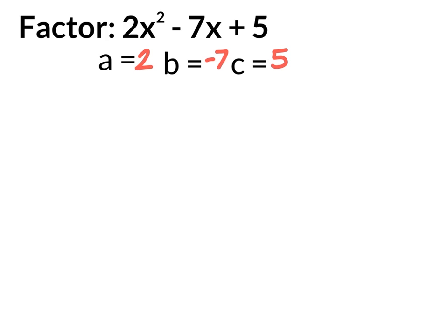For these examples I want you to multiply a times c together because we can't withdraw a greatest common factor. So a times c equals 2 times 5 which equals 10.